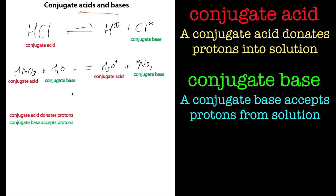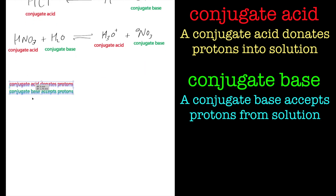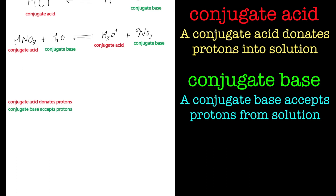Let's have a look at another example — something like ammonia. Ammonia is NH₃, and if this is in water, what are the products going to be? We've got H₂O, and that's an equilibrium. Ammonia is going to pick up a proton and become NH₄⁺, and it's going to leave a hydroxide ion, OH⁻.